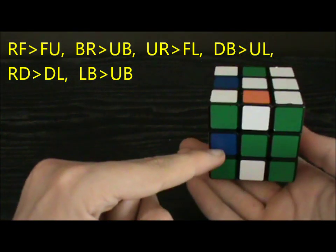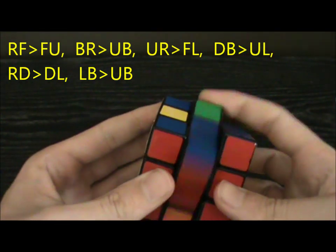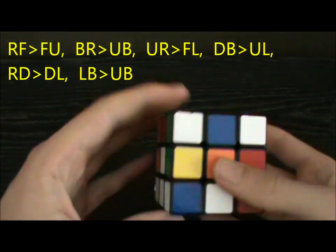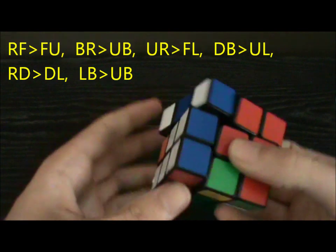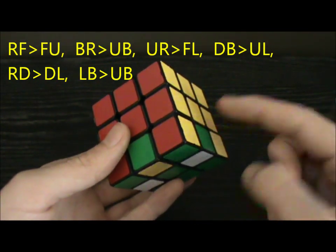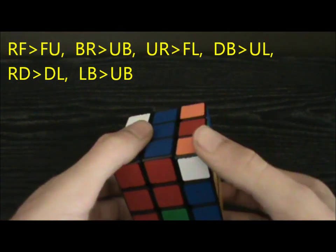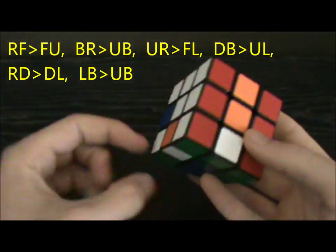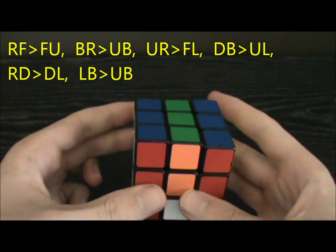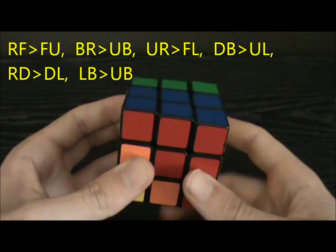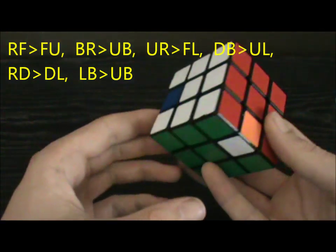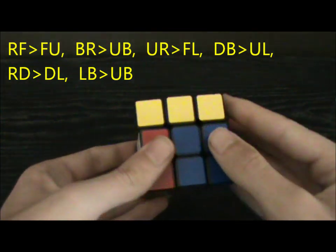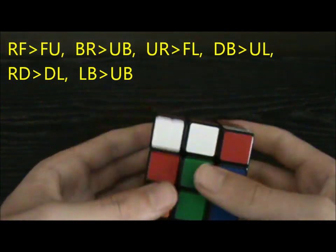Now the target is DB which can be solved with this algorithm. The target is now UL which can be set up with L U' L' U, M2, undo setup. Now the target is RD which can be set up by doing B' R' B, M2, undo setup. Now the target is DL which can be set up easily by doing U' L2 U, M2, undo setup. Now the target is LB which can be set up by doing L B L' B', M2, undo setup.